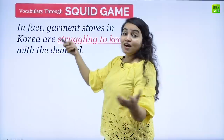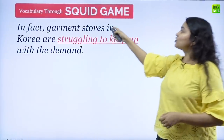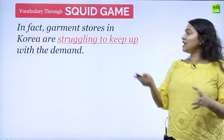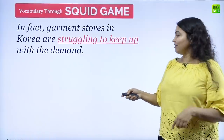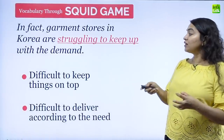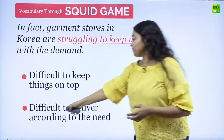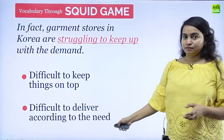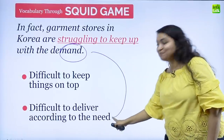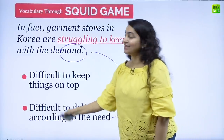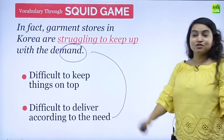Let's look at another sentence: garment stores in Korea are struggling to keep up with the demand. What does it mean when I say I'm struggling to keep up with the demand? Does it mean I'm finding it difficult to keep things on top somewhere, or that I'm finding it difficult to deliver according to the need? The clue is 'demand' — there is obviously a need, so the correct answer is: I am finding it difficult to deliver according to the need.